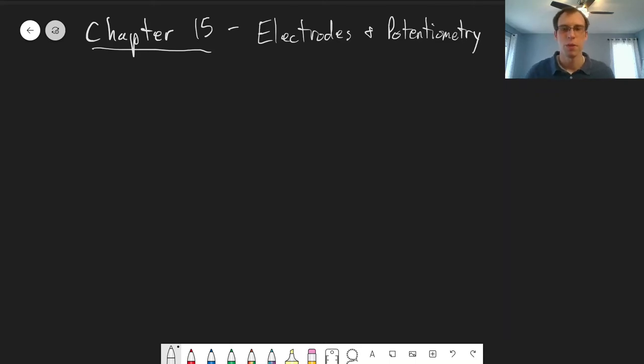Hello and welcome to Chapter 15, where we're discussing applications of electrode chemistry to analytical chemistry. Specifically, we're looking at potentiometry—the use of measuring electrical potentials to determine concentrations of species in solution.